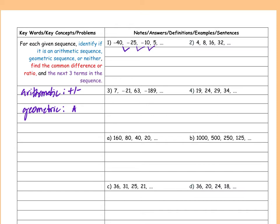Let's start with an easier question — am I adding and subtracting, or multiplying in this sequence? I need to know what I'm doing to get from negative 40 to negative 25. Someone said subtracting — good, but if I was subtracting, my numbers would be getting smaller or more negative. So am I getting more negative? No — I'm adding. I'm getting less negative and going more towards the positive, so I'm adding.